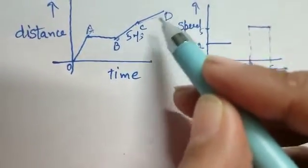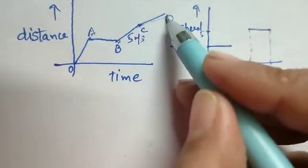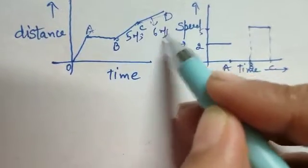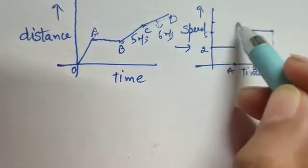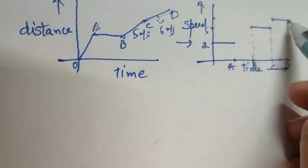if we see carefully, this is CD. If we calculate or if it is given that in the CD part, calculating its slope, we are getting speed say 6 meters per second. So in the graph we will get speed in the CD part as 6 meters per second.